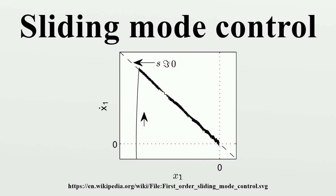In the context of modern control theory, any variable structure system, like a system under SMC, may be viewed as a special case of a hybrid dynamical system, as the system both flows through a continuous state space but also moves through different discrete control modes.